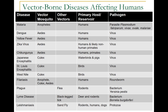Here we can see several vector-borne diseases affecting humans: malaria, dengue, yellow fever, Zika virus, chikungunya, Japanese encephalitis, St. Louis encephalitis, and West Nile. For all of these diseases the main vector is mosquito, including filariasis, where the vector is also mosquito. The mosquitoes have been grouped into three different types that are the predominant vectors of human diseases.